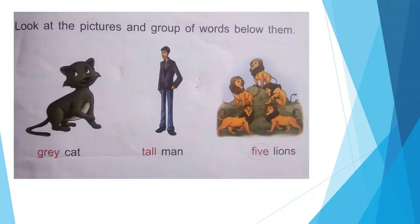Now look at your book page number 9. Look at the picture and group of words below. Grey cat — cat is a noun and grey is an adjective. Tall man — man is a noun and tall is an adjective. Five lines — lines is a noun and five is an adjective.